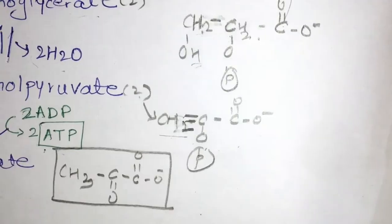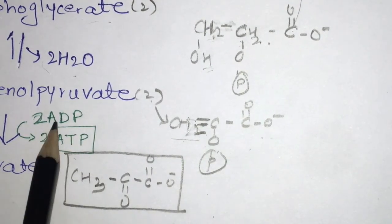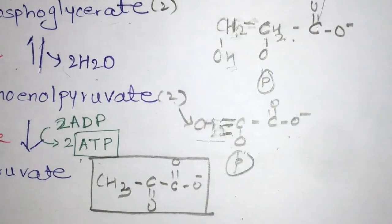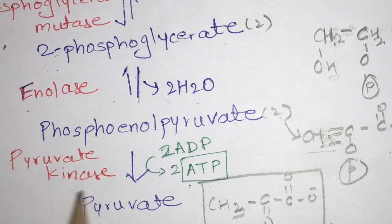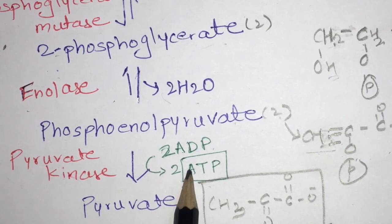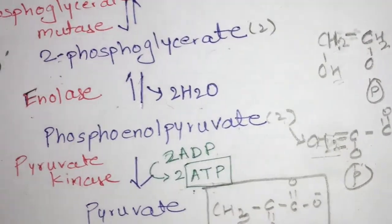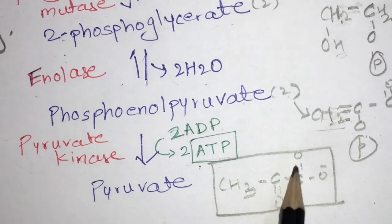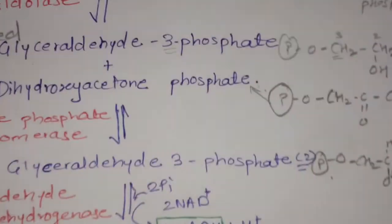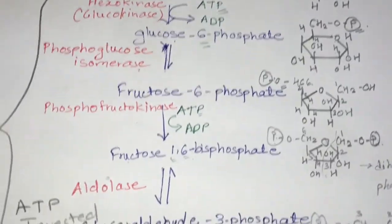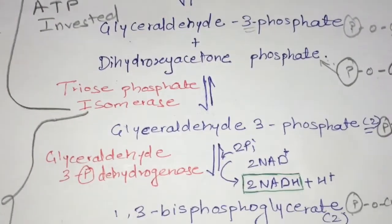Now from phosphoenolpyruvate, the phosphate is taken out. As there are 2 molecules, 2 ADP molecules will receive 2 phosphate groups with the help of pyruvate kinase enzyme, generating 2 ATP. Then pyruvate is generated — a 3-carbon compound. So glucose is broken down to pyruvate. This is the glycolysis reaction, in which the first 5 reactions are ATP investment reactions and the subsequent reactions are ATP-earning reactions.